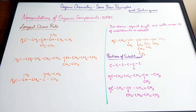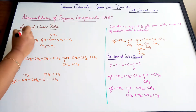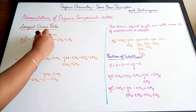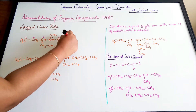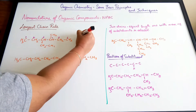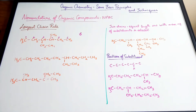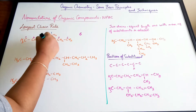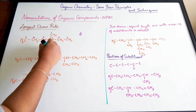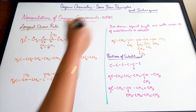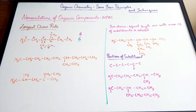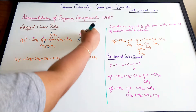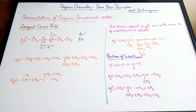Here, for the first compound, you have two possibilities. The first chain has 3, 4, 5, and 6 carbon atoms — so 6 carbon atoms. The second possibility has 1, 2, 3, 4, 5 carbon atoms. Based on the longest chain rule, we need to select the chain which has 6 carbon atoms and not 5 carbon atoms — just picking the longest chain.